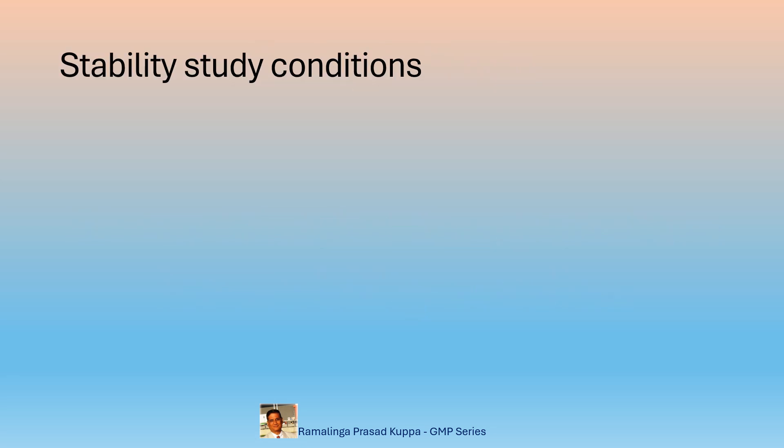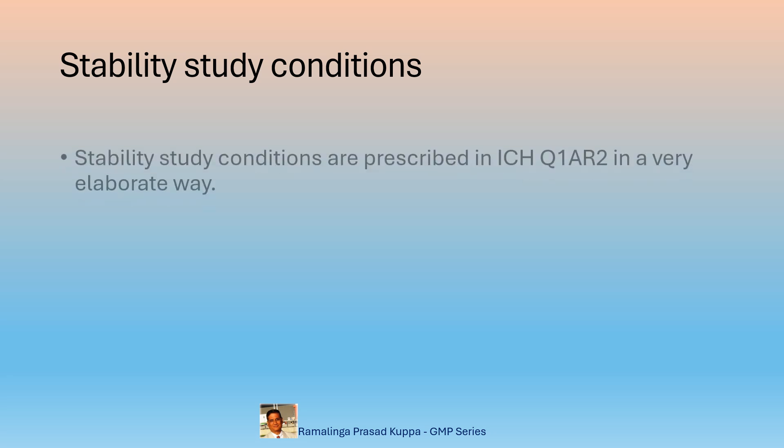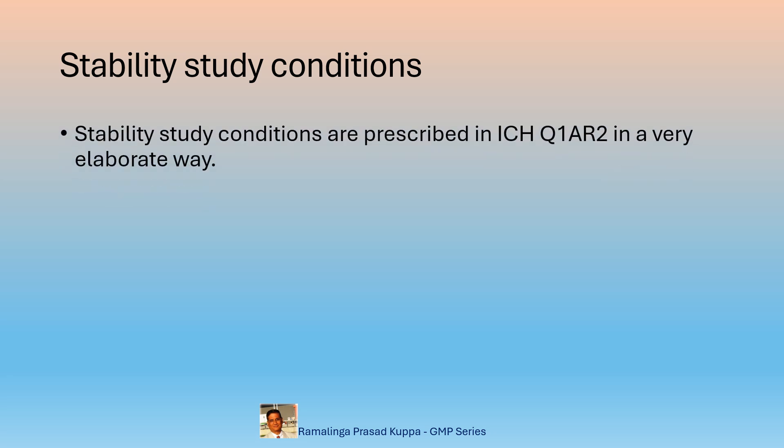Stability study conditions are prescribed in ICH Q1AR2 in a very elaborate way. The content of this guideline is not the part of this discussion. The allowed temperature excursions and the importance of mean kinetic temperature, the MKT, are of importance.